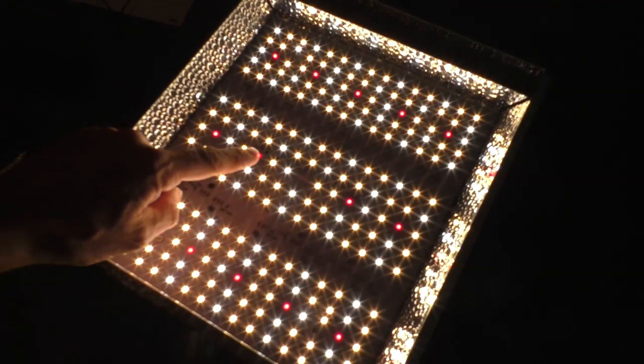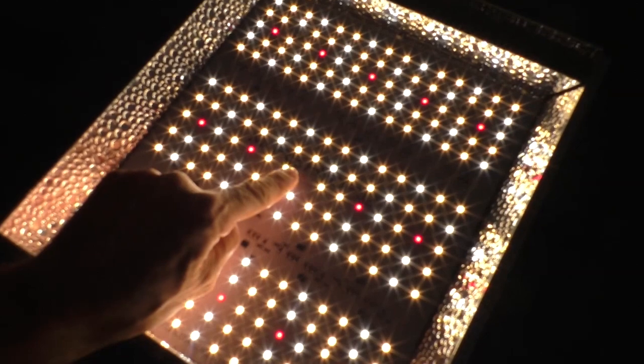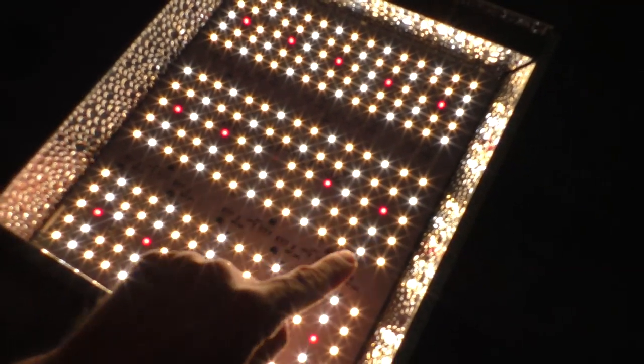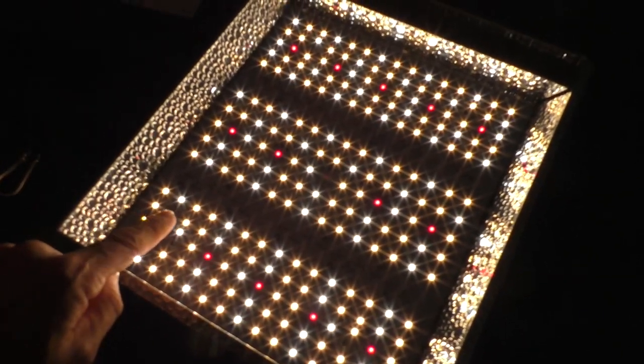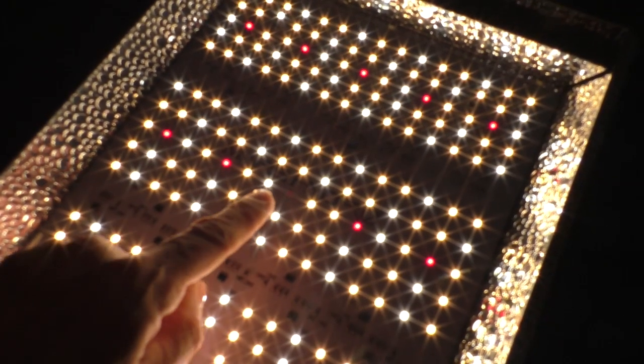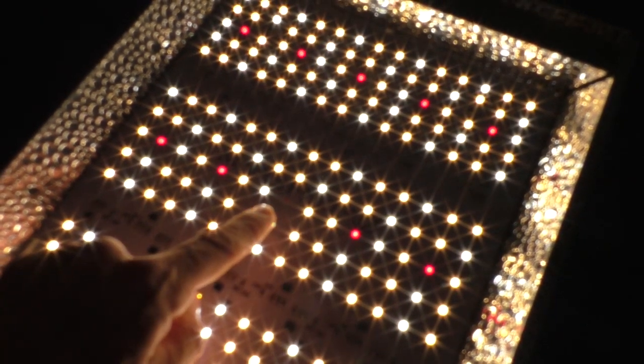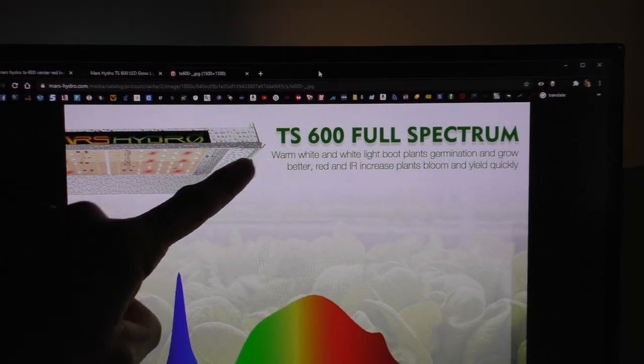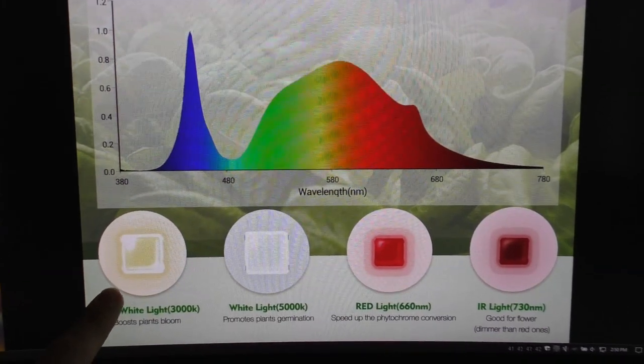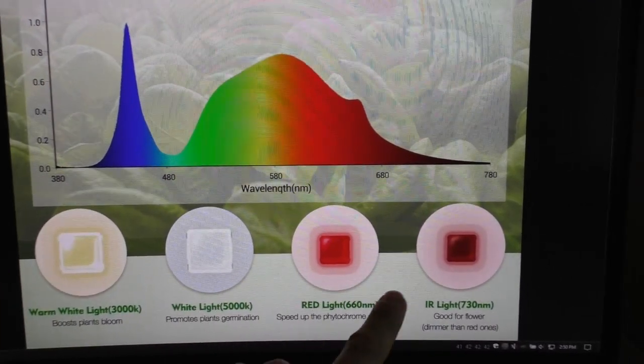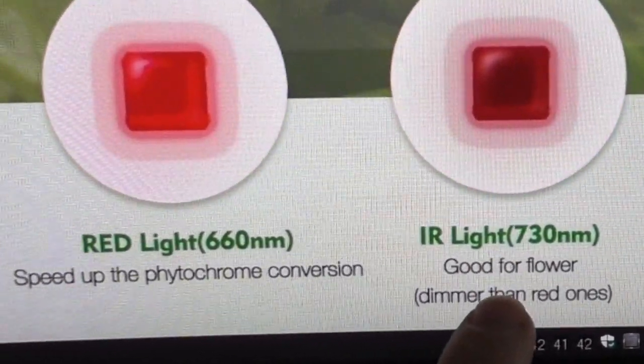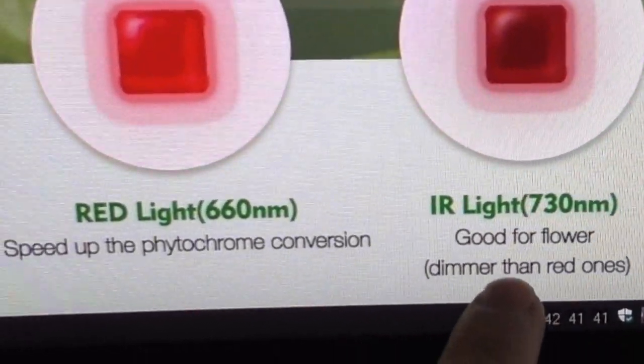One thing I noticed with the light is the very center red LED isn't as bright as the other ones. I emailed them and they told me it's supposed to be that way because this is an infrared LED. On the Mars Hydro website it shows the spectrum of the light and the different LEDs that are used. Here is that one LED - it's an IR infrared wavelength and it says that it's dimmer than the red ones, so that explains it.